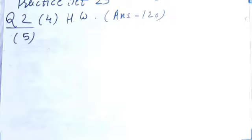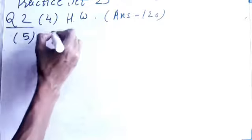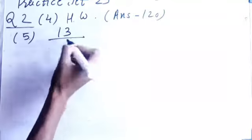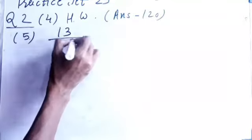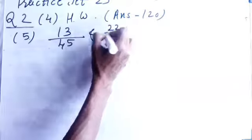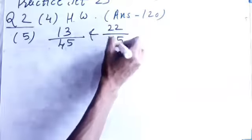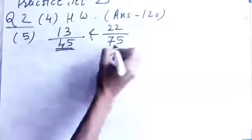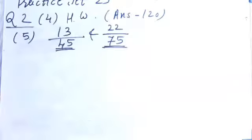In this example itself they have told, you have to find the fractions, these two fractions, you have to equalize the denominator. Which two fractions are given? 13 upon 45 and 22 upon 75. We need to equalize the denominators of this.